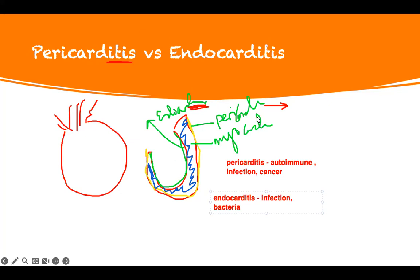Now you have to know what to do with them — the symptoms each of them is going to have. It's different. The pericardium, if it's affected, it gets thickened — so this is pericarditis. It gets thickened and becomes really hard, and it affects heart movement.